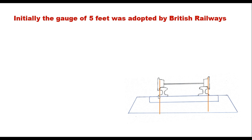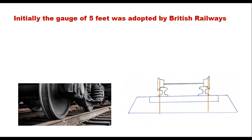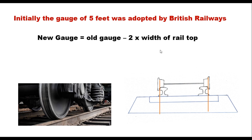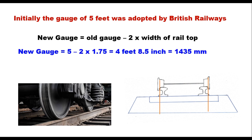Subsequently it was found that there is not much advantage of keeping the wheel flange outside the rail and therefore they were changed to the inner side. Now the wheel flange is on the inner side and accordingly the definition of gauge changed — it is now the clear distance between inner faces of the rails. Therefore the new gauge is old gauge minus twice the width of the rail top. The width of rail top at that time was 1.75 inch, so the new gauge is 5 feet minus twice 1.75 inches, that is 4 feet 8.5 inches, or 1435 millimeters.